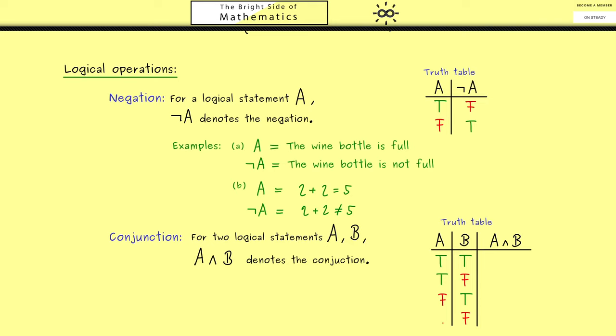Now from bottom to top you know this one is false because we have at least one false here, the same here and the same here. Everything is false except the first row. This one is true because both are true.